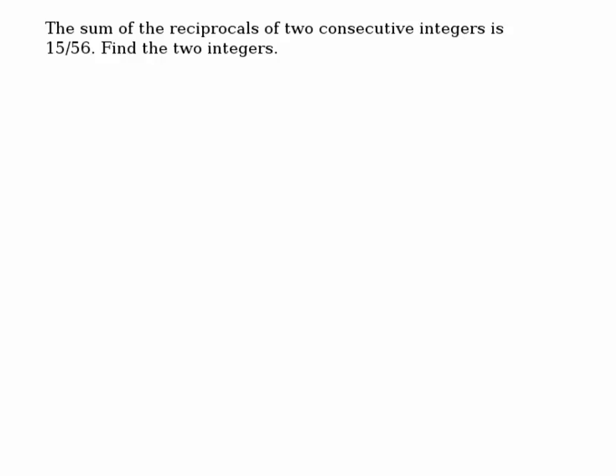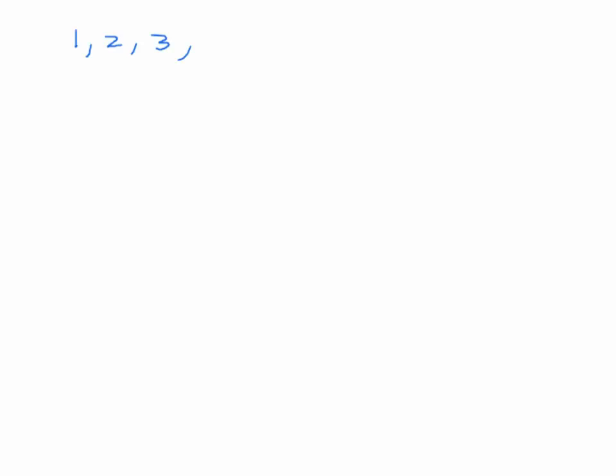So we want to find the consecutive integers. When we talk about consecutive integers, you're looking at like one, two, three — these are consecutive integers. If I assume the first number is x, what would be the next number after that? X plus 1. Very good, so it's x plus 1.